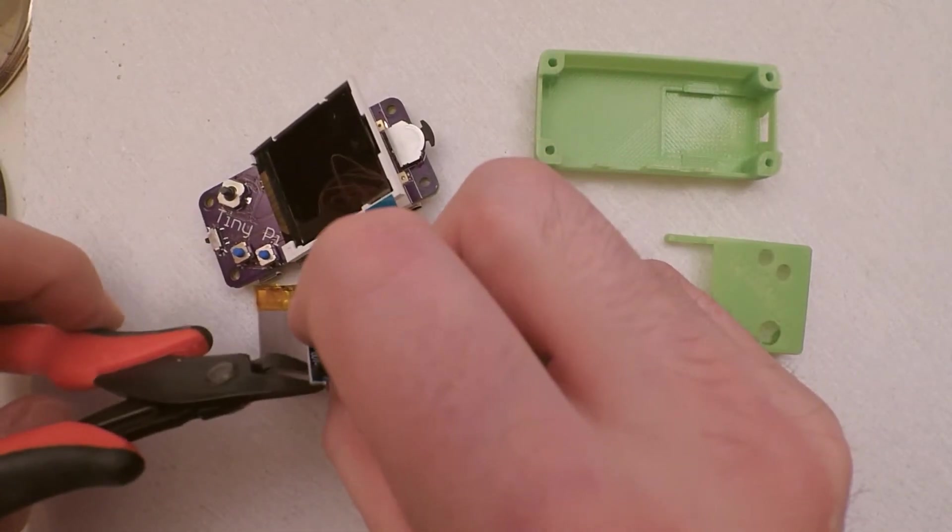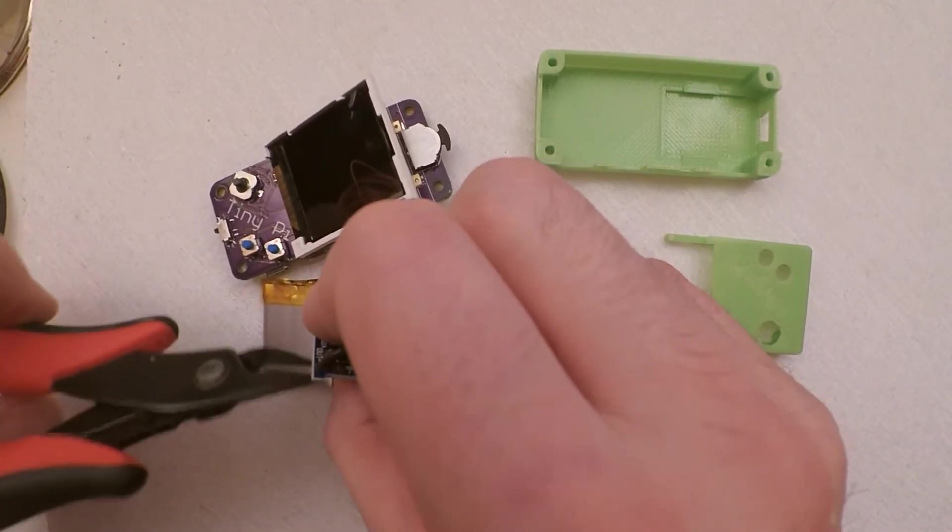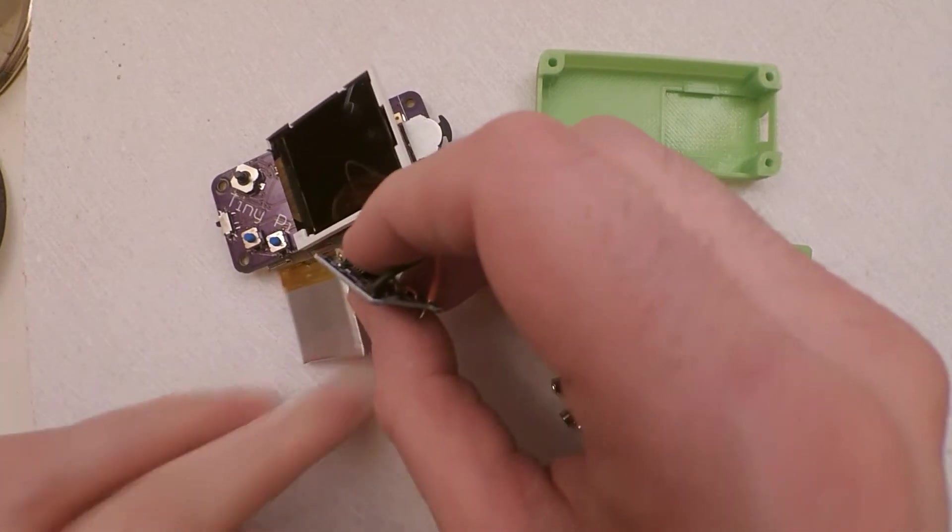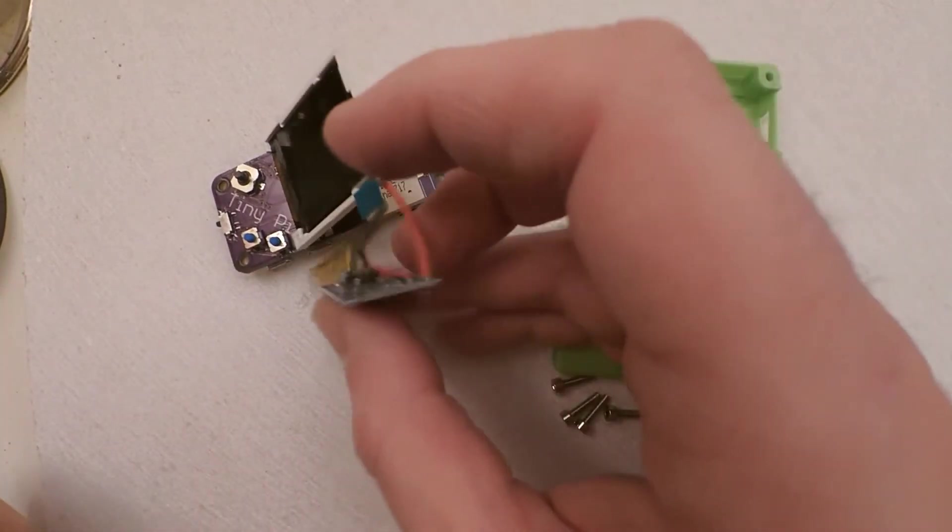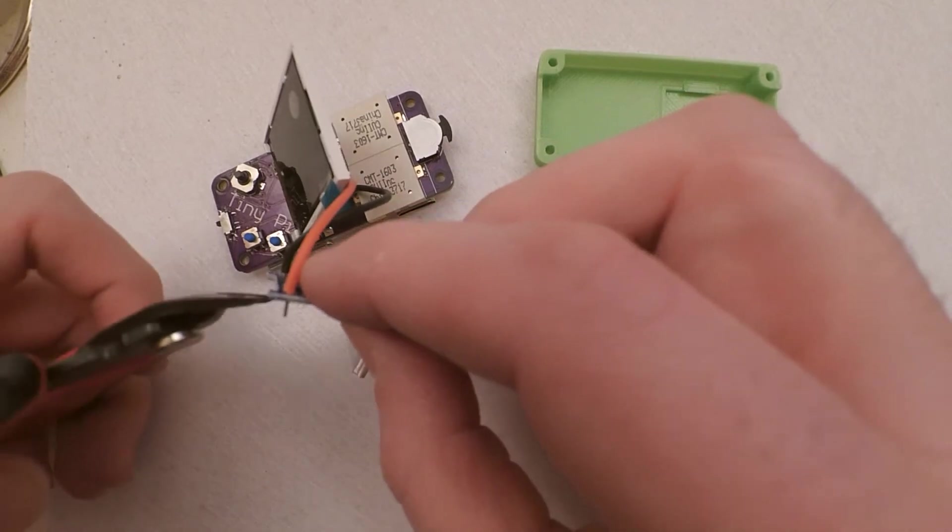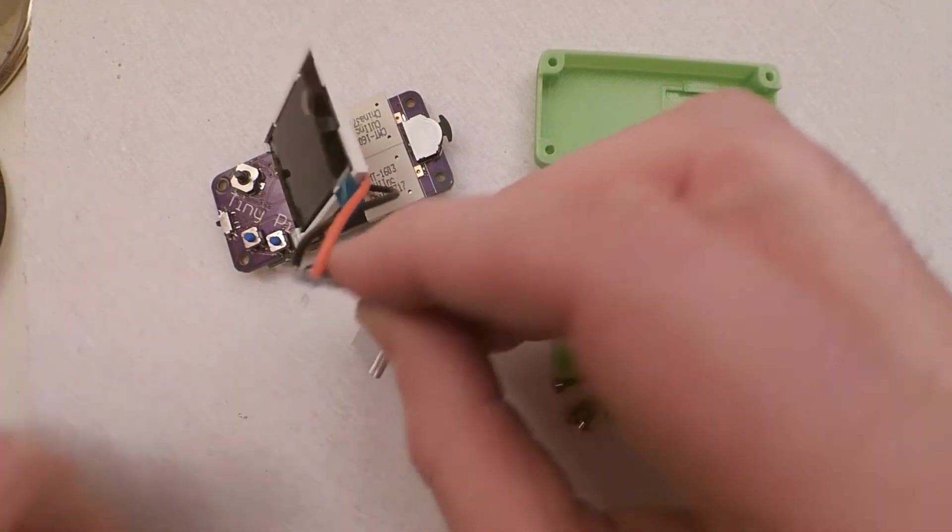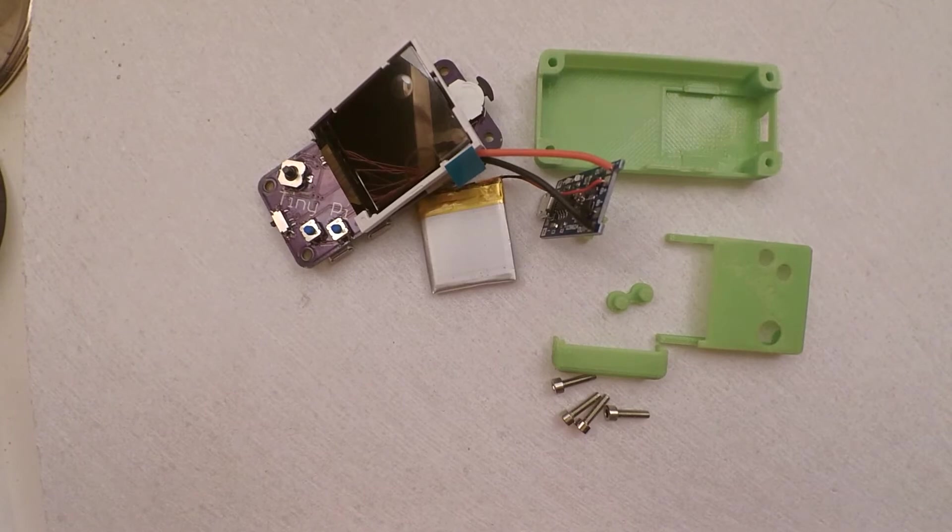So, flush cutters. Snip that off as flat as you can whilst making sure you don't touch everything all together because that won't be good. We don't want to let the magic smoke out.